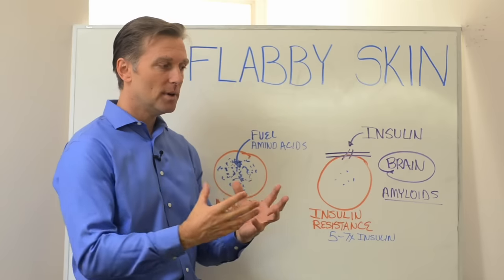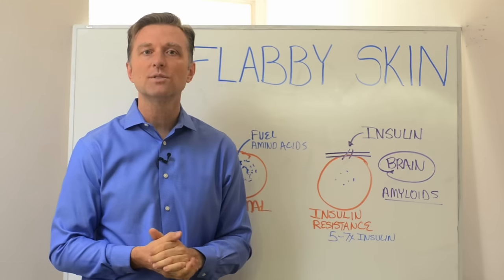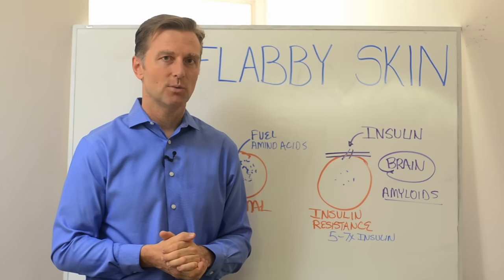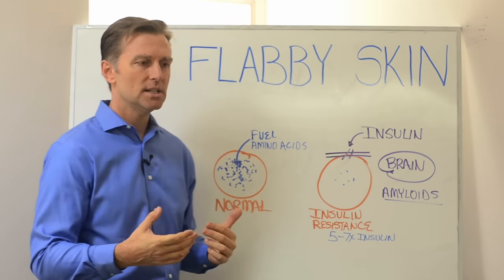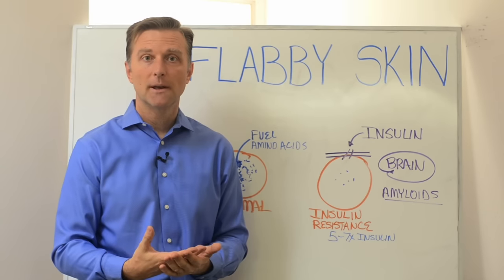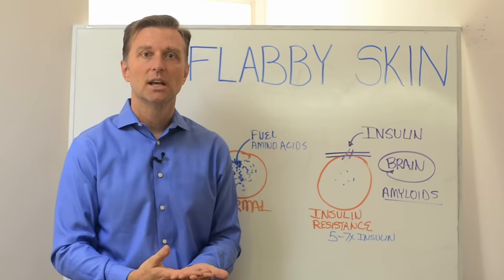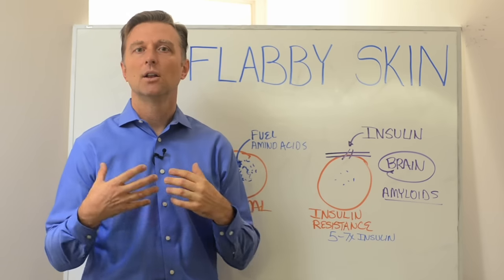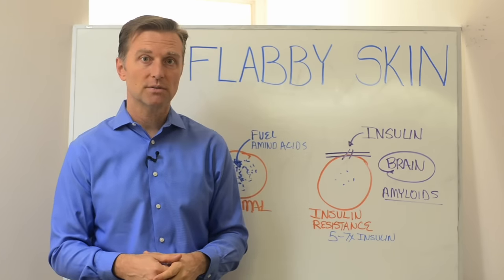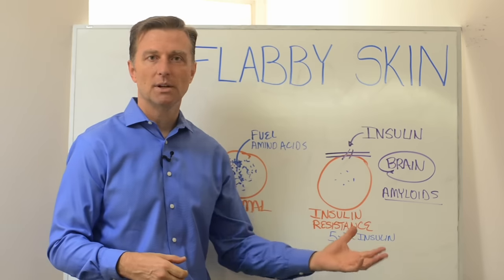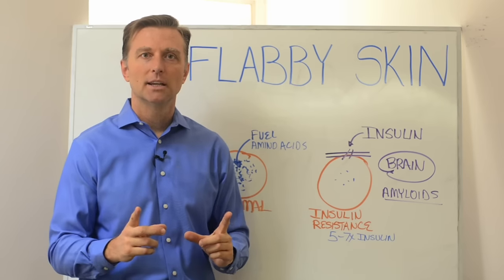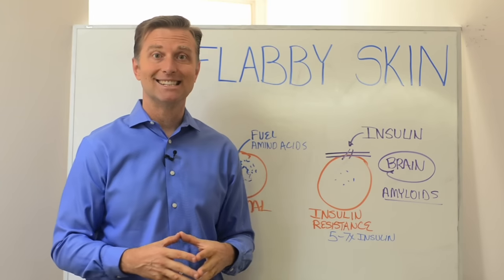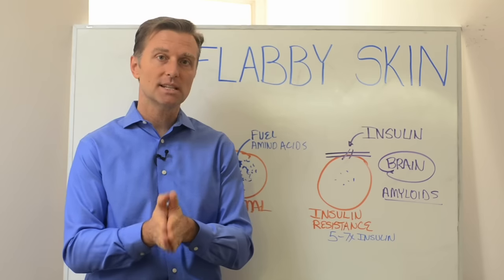Insulin is the hormone that allows the absorption of proteins, specifically branched amino acids. Branched amino acids are specifically good to repair and replenish lost muscle — you see this a lot in people that are exercising, weightlifters. So if you're losing muscle and atrophying, you would want branched amino acids. But the problem is insulin is not working to pull those amino acids into the cell because you could have insulin resistance.